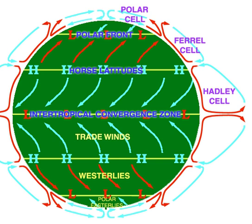Atmospheric circulation is the large-scale movement of air, and together with ocean circulation is the means by which thermal energy is redistributed on the surface of the Earth.